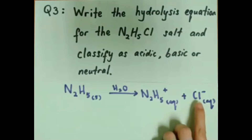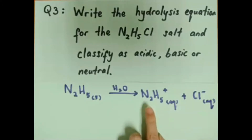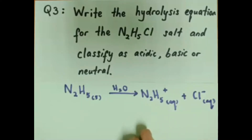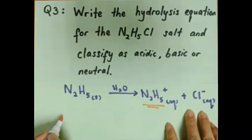Please take note that the Cl⁻ ion comes from HCl, which is a strong acid, while the N2H5⁺ ion comes from N2H4, which is a weak base. From these two ions, we choose the N2H5⁺ ion from the weak base.